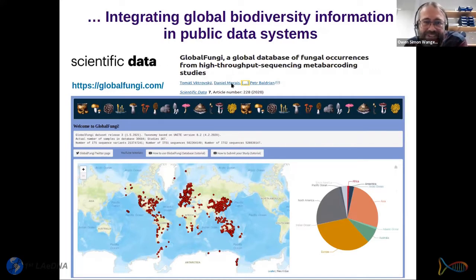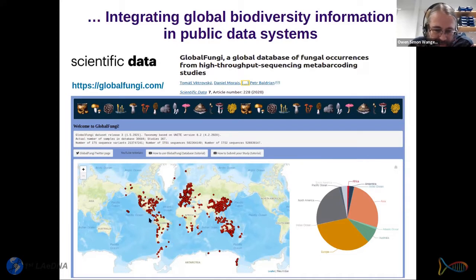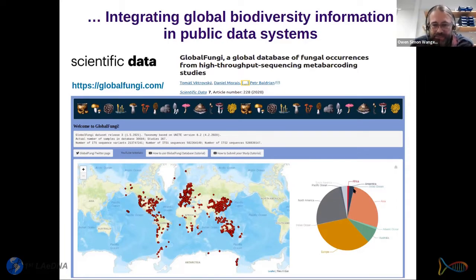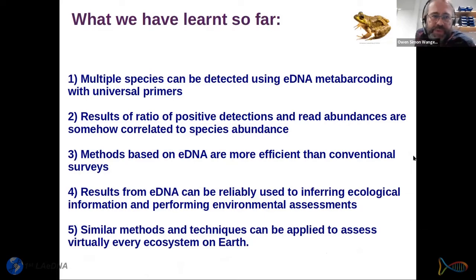This kind of global information is beginning to be shared in public data systems. One nice example is the global fungi database — one of the developers is Daniel Murais, a Brazilian scientist. Interestingly, we have eDNA data for fungi from all over the world, but some regions are clearly underrepresented. South America appears as a gray area — even with a Brazilian developer, there's a big hole in the middle of South America. There is still a lot of work to do.